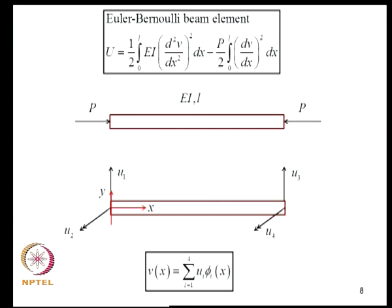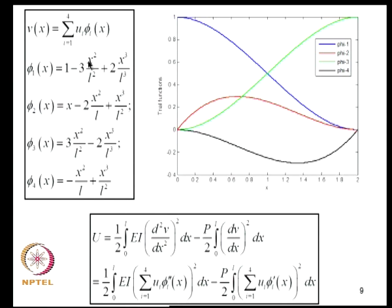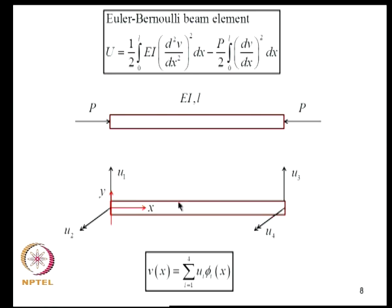The total potential energy for an Euler-Bernoulli beam element carrying an axial load P has been derived. The element has two nodes and two degrees of freedom per node — displacement and rotation — giving four degrees of freedom total. The displacement field is assumed using cubic polynomial trial functions φI, as appropriate for this problem since the highest derivative in the functional is 2, requiring a polynomial with four coefficients.